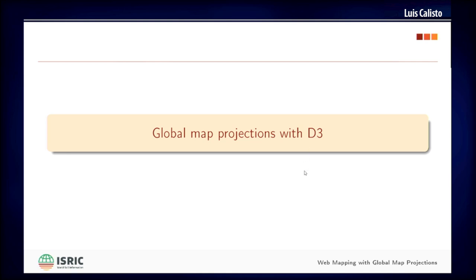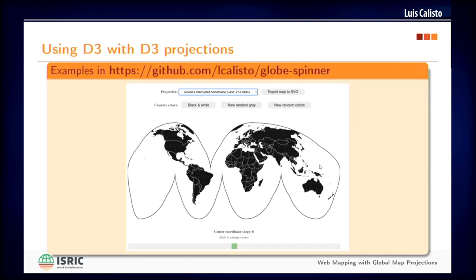If you want to try something with D3, there are some nice examples you can follow via that link. It uses vectors rendered with D3 and includes code that works with several of these projections. I recommend you have a look at those examples and the code. And that's basically it.